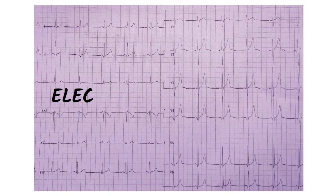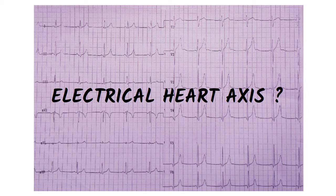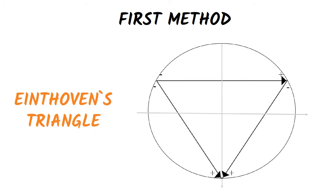There are several ways of determining the electrical heart axis on an ECG. We will practice two of them in this video. The first method is a bit more complicated and it uses Eindhoven's triangle, which is included in a circle.